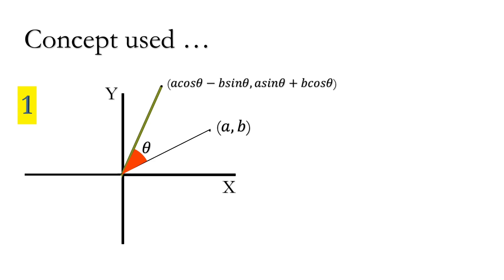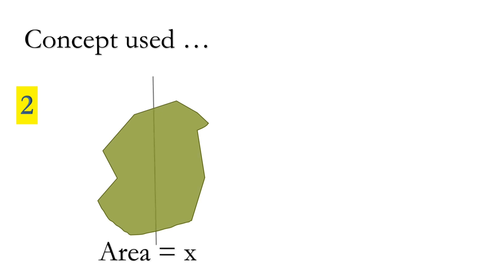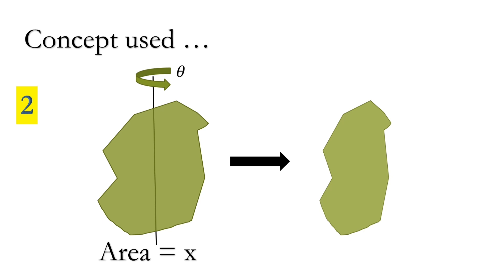The second concept we will use is this: suppose there is an irregular surface with an area x, and about this axis we rotate it through an angle of theta — then the visible region will have an area x·cos θ. These two concepts we will use in our proof.